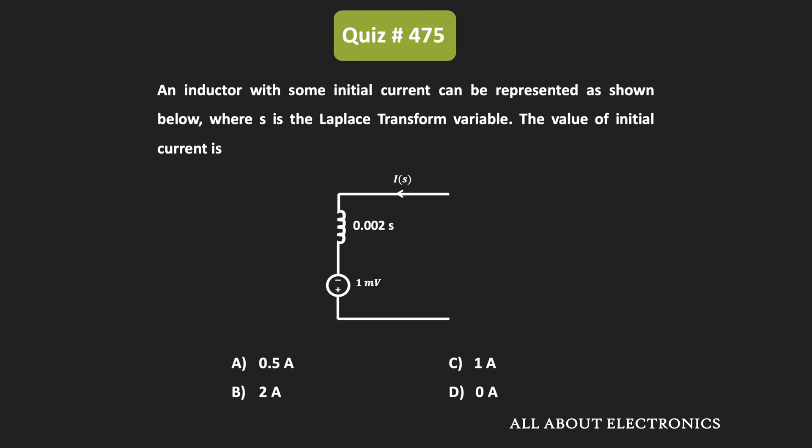Hey friends, welcome to the YouTube channel All About Electronics. So in this question, we have been given that one inductor with some initial current can be represented by the given circuit. So basically, we have been given the s-domain circuit for the inductor. And here, we have been asked to find the initial value of the current through the inductor.